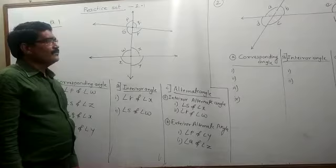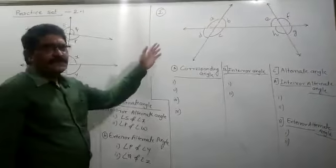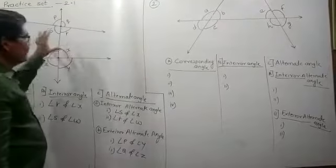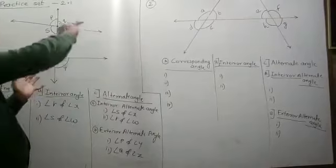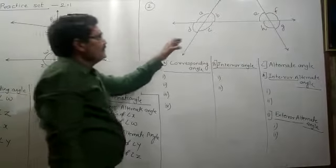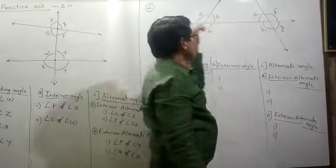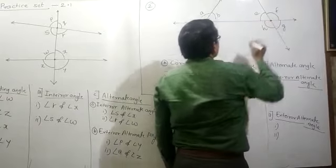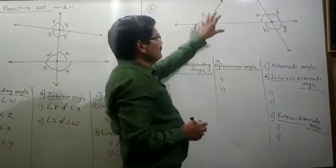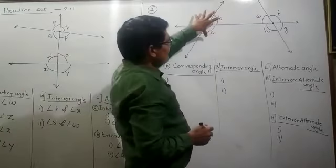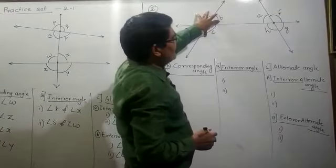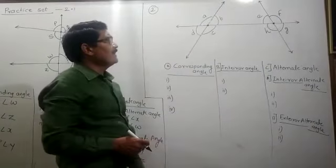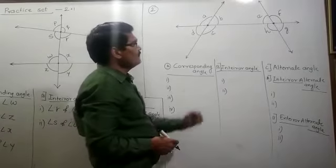Now we go to the next question. Again in this question you have to find out the corresponding angles, interior angles, and alternate angles. This diagram is the same as before — only the figure is turned. The transversal intersects two lines in two distinct points. At each vertex, eight angles will form in total. You have to find out the corresponding angles in the same manner.